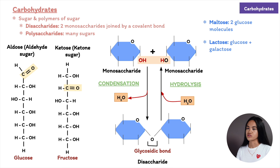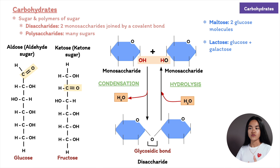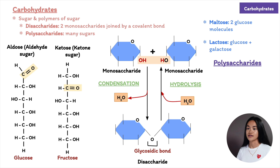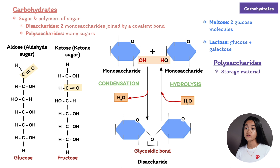In order for organisms to use disaccharides as fuel, they need to be broken down into monosaccharides first via hydrolysis — the reverse of the dehydration reaction. If we add multiple units of monosaccharides we form polysaccharides, with the monosaccharides joined by glycosidic linkages.